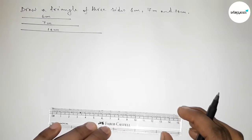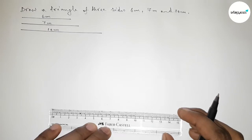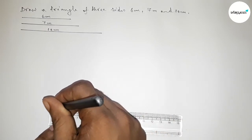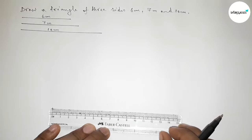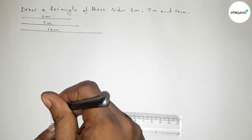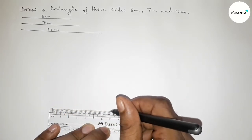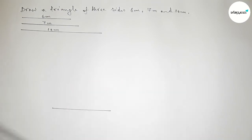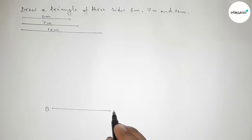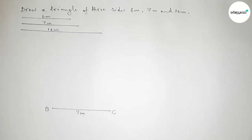Now we have to draw a line of 7 centimeter using a scale. So this is 7 centimeter. Taking here point B and here point C, so BC equals to 7 centimeter.